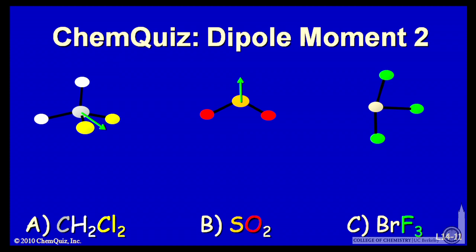there's enough electron pairs around the bromine that you have a bent T configuration, steric number 5. So this molecule also will have a dipole moment.